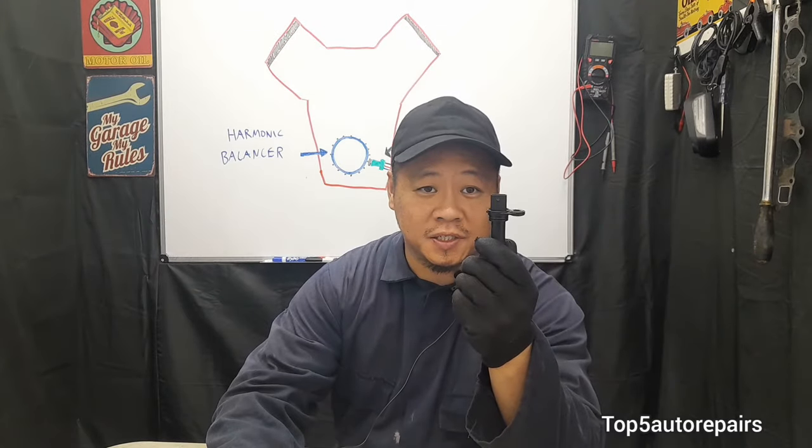The crankshaft position sensor works together with the timing system, and when it starts to fail, it's going to exhibit a few symptoms.